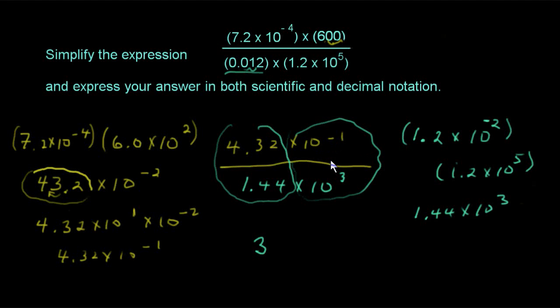And then what do we do when we're dividing with exponents? We just subtract the exponents. So we're going to have 10 to the negative 1 subtract the 3, and we get times 10 to the negative 4.